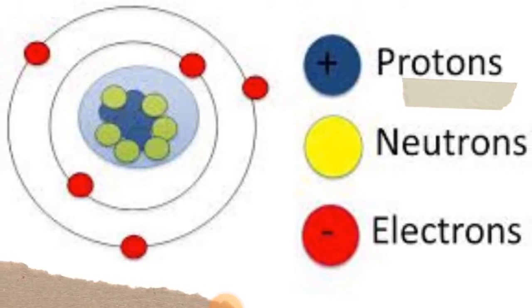Now when atoms of the same elements, for example, let's use an element hydrogen, an atom of hydrogen reacts with another atom of the same hydrogen, what we get is a molecule. But when atoms of different elements now react, then what we get is a compound.